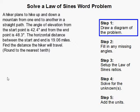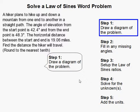up and down a mountain from one end to another in a straight path. The angle of elevation from the starting point is 42.4 degrees and from the end point is 48.3 degrees. The horizontal distance between the start and end is 19.06 miles. Find the distance the hiker will travel, round to the nearest tenth.